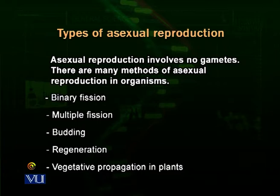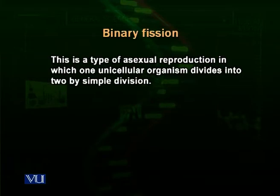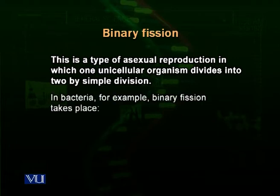Now let's talk about binary fission in more detail. Binary fission — binary means two, fission means division or rupturing. This is a type of asexual reproduction which is very common in bacteria and is the major method of reproduction in prokaryotes. The bacteria divides by binary fission; we can also say they reproduce by binary fission.